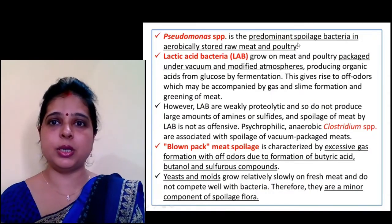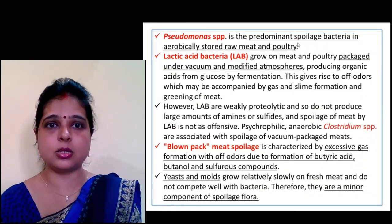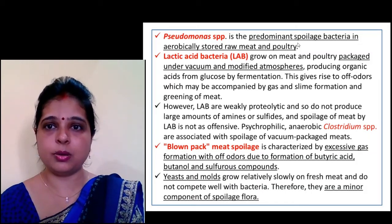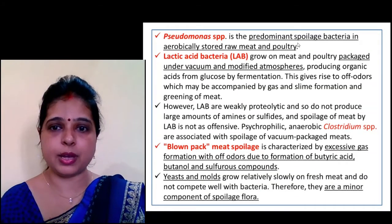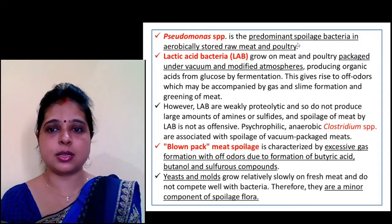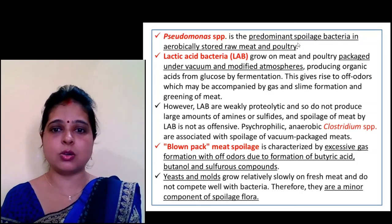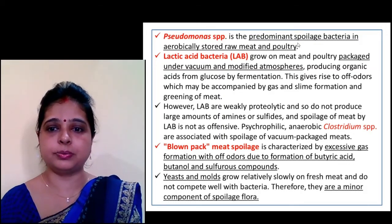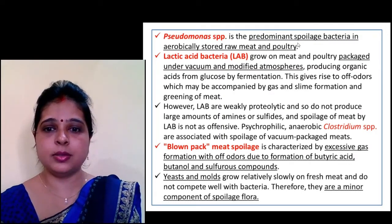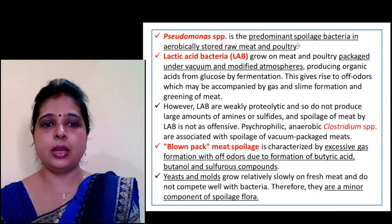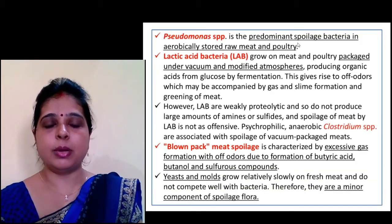Pseudomonas is the predominant spoilage bacteria in aerobically stored raw meat and poultry. Lactic acid bacteria grow on meat and poultry packed under vacuum and modified atmosphere. Blown pack meat spoilage is characterized by excessive gas formation resulting in a very bad smell, caused by the formation of butyric acid, butanol, and other sulfurous compounds in meat products.